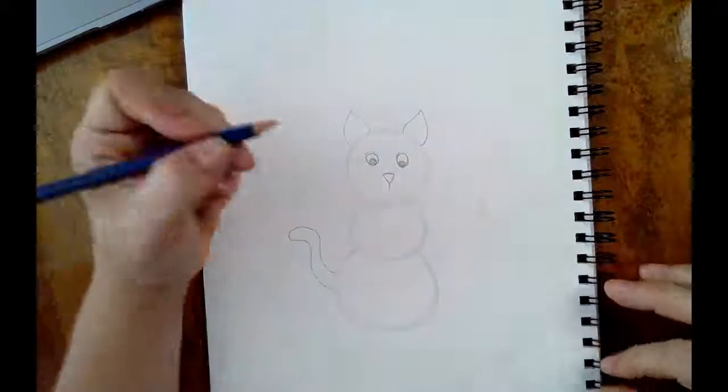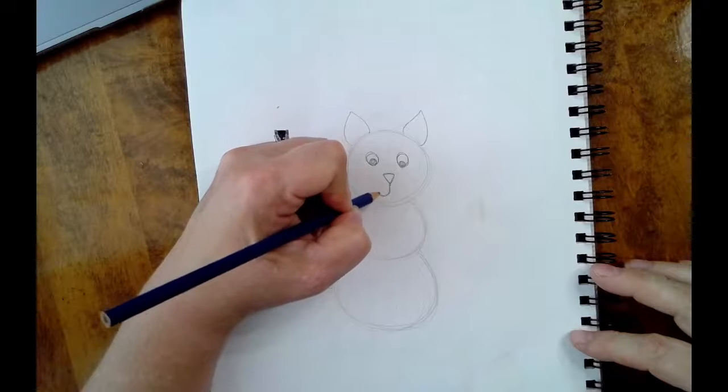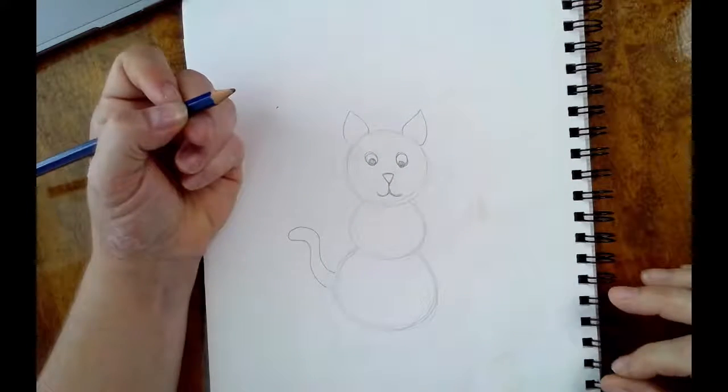Then you're going to come down here and make that line that makes his mouth, and you're going to make it hook across like this, just like that.